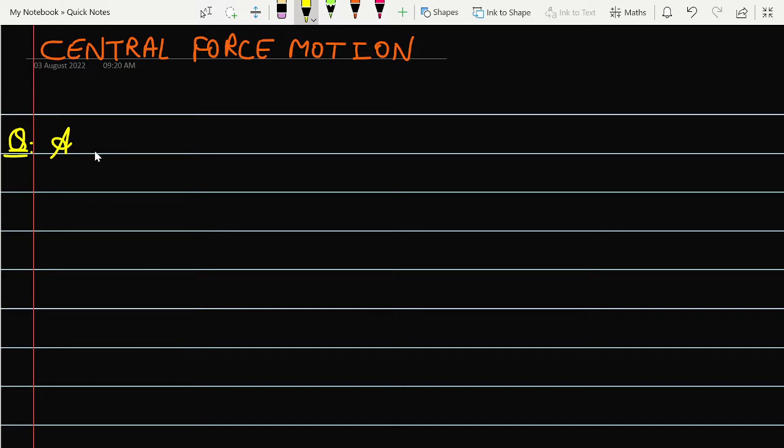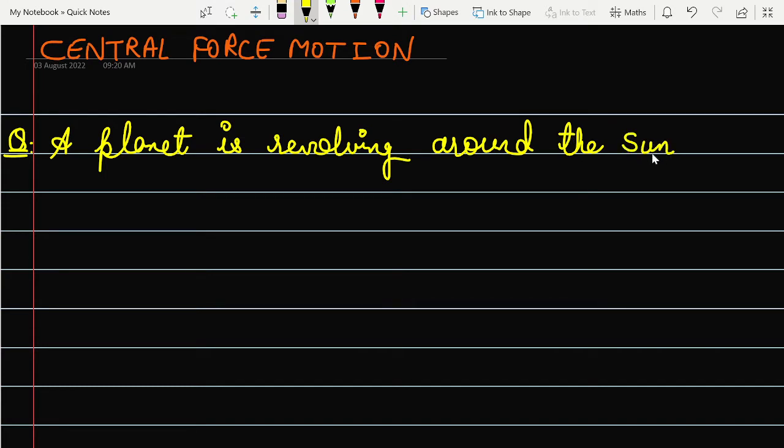We are having a question here: a planet is revolving around the sun. The questions are many questions in the exam - GATE, NET, JEST, TIFR. In the exam many questions are asked in an elliptical orbit.